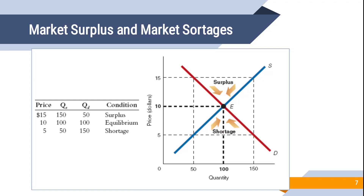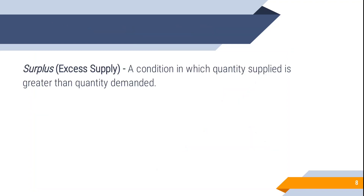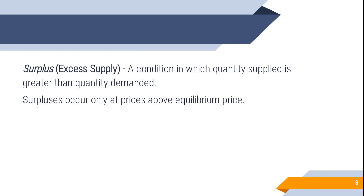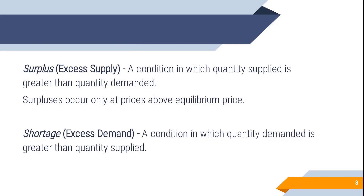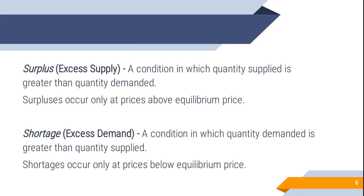The bottom line is that price is an automatic regulator that tends to keep production and consumption in line. If price moves up, buyers are discouraged and suppliers are encouraged. If price moves down, buyers are encouraged but suppliers are discouraged — so it automatically moves to the equilibrium. Surplus is when more quantity is supplied than demanded; shortage is when more people want to buy than products available.